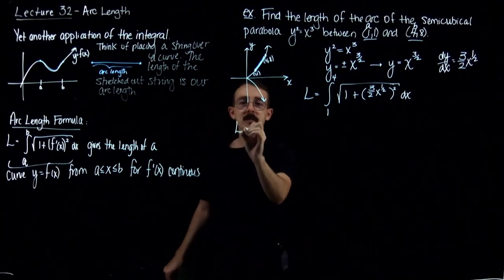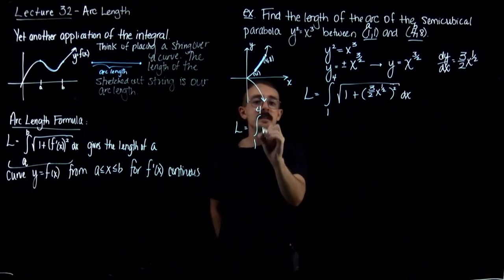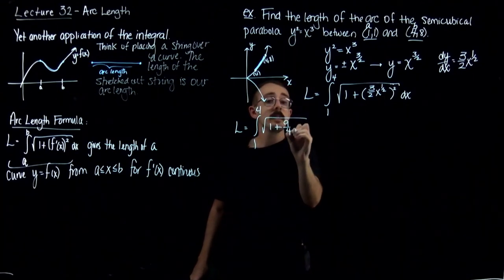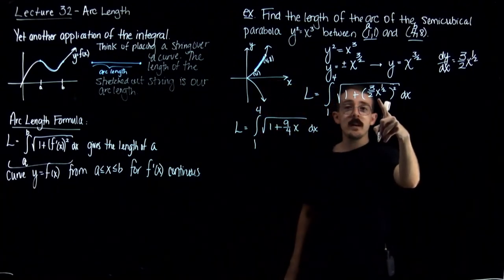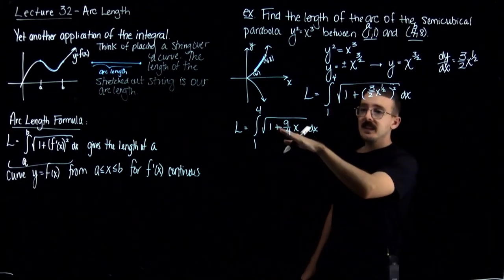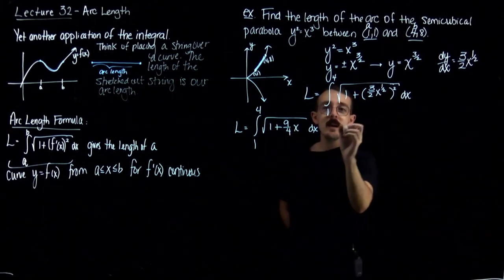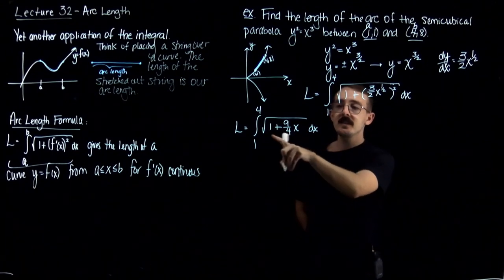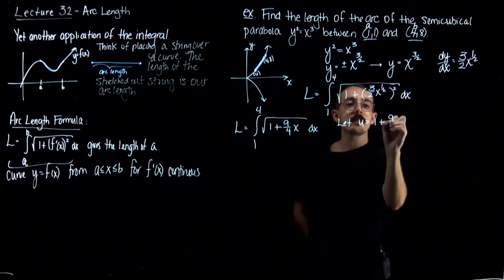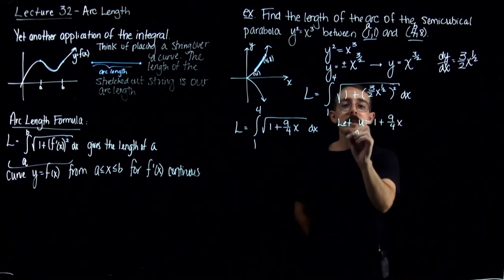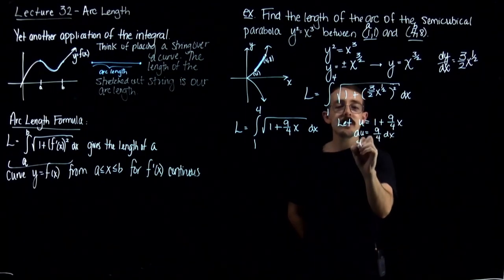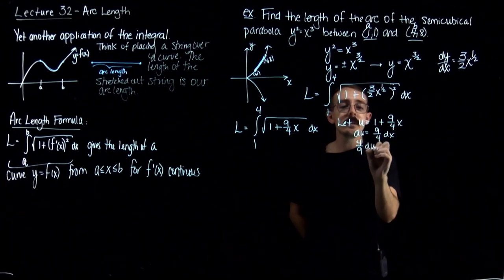So I have the integral from 1 to 4. This is the square root of 1 plus — if I square 3/2 x to the 1/2, I get 9/4, and then squaring x to the 1/2 gives x. This is not a nice integral, but I can make it better with a u-substitution since this is just something linear. Let u equal 1 plus 9/4 x. That means du is 9/4 dx, and therefore 4/9 du equals dx.